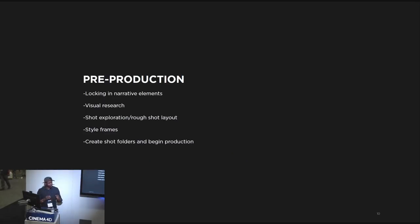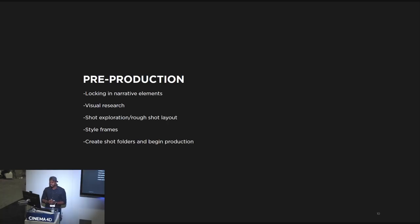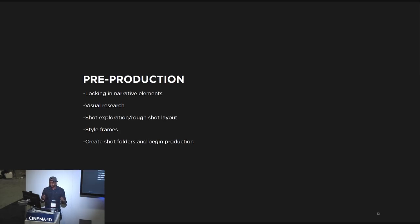Pre-production. It's about locking down those narrative elements — the cloth, the elements, the positions, what types of things we're going to use. Then we do visual research to figure out what posture these figures are going to have, how these elements are going to look, how the textures on the cloth are going to look. Then doing some rough exploration — compositions, lighting, shots. Then we create style frames to really hone in on that visual aesthetic. Then we create shot folders and get all our production files organized before jumping into production.